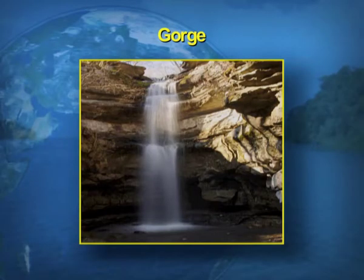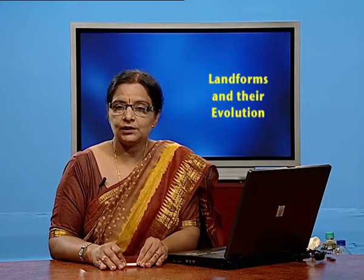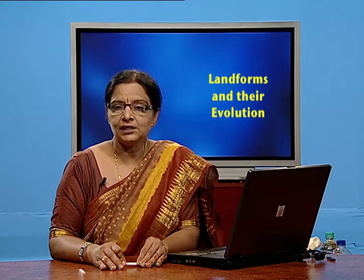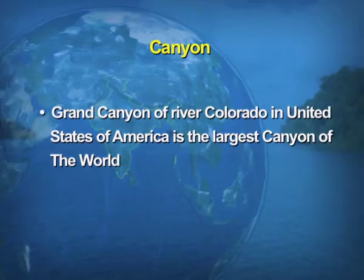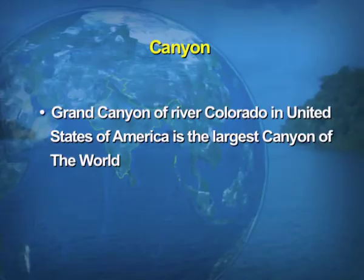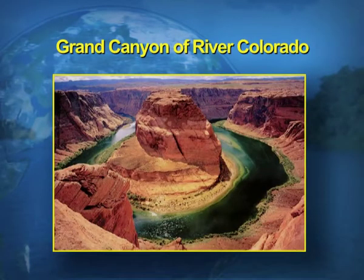You can view a gorge on screen — how the valley is formed and the water flows through it. Canyon is just a magnified form of gorge. In areas of arid climate with little rainfall, the valley sides fail to be widened at all, and the river cuts deeper only in its flow, resulting in the formation of a canyon. The best example is the Grand Canyon of the river Colorado in the United States of America.